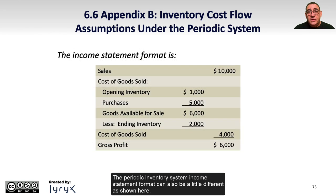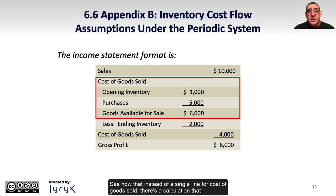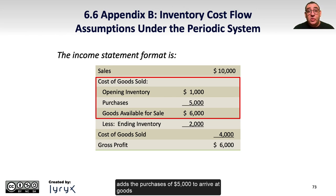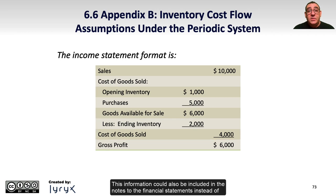The periodic inventory system income statement format can also be a little different, as shown here. Instead of a single line for cost of goods sold, there is a calculation that discloses the opening inventory of $1,000, adds the purchases of $5,000 to arrive at goods available for sale of $6,000, and then deducts the ending inventory of $2,000 based on the inventory count to arrive at cost of goods sold of $4,000. This information could also be included in the notes to the financial statements instead of directly on the face of the income statement to save space.